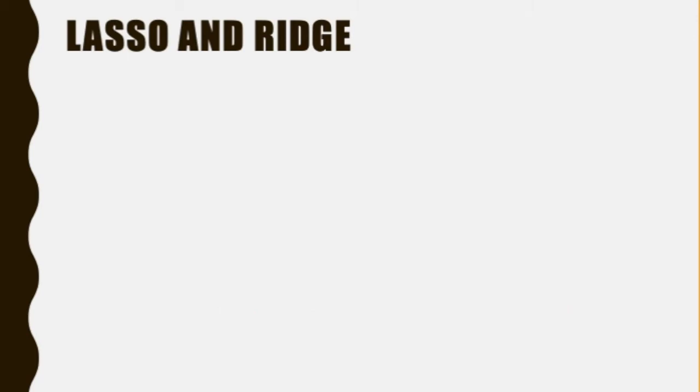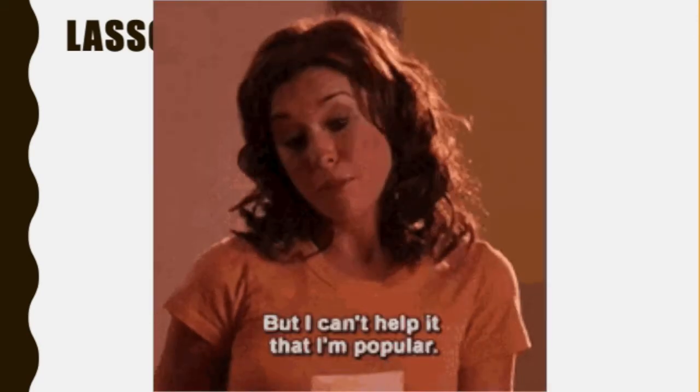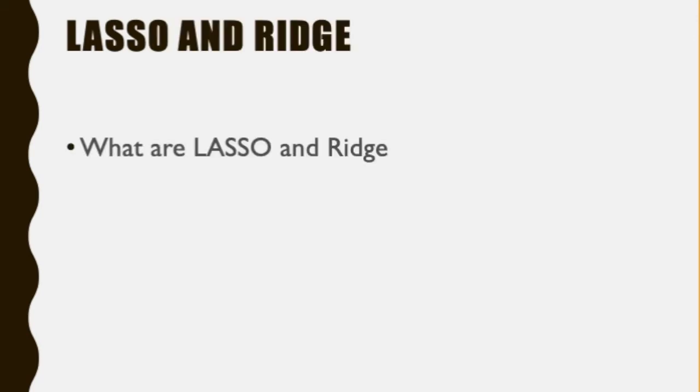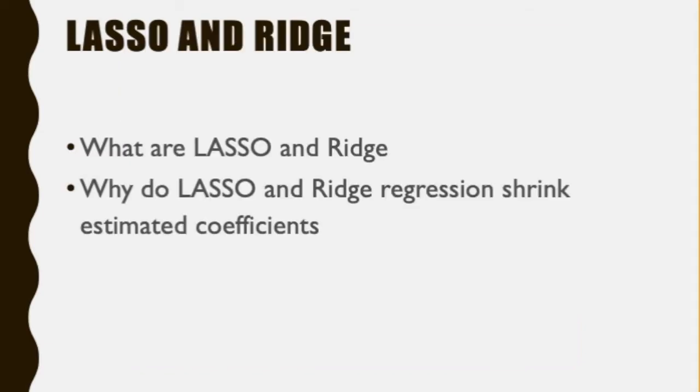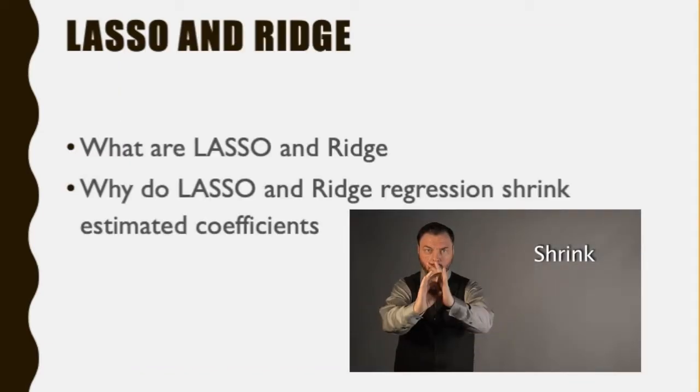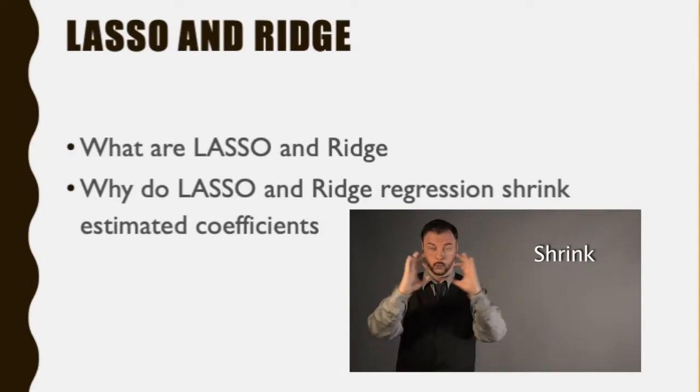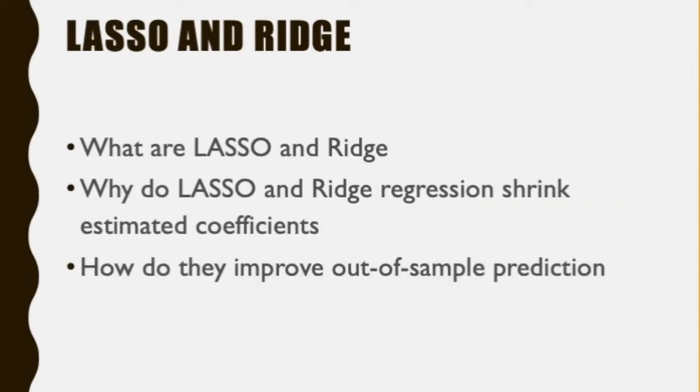In this video, I'm going to introduce two of the most popular machine learning methods, Lasso and Ridge regression. After I show you the formulation of the two regression methods, you will be able to get an intuition on how Lasso and Ridge regression shrink estimated coefficients towards zero and eventually help improve out-of-sample prediction.